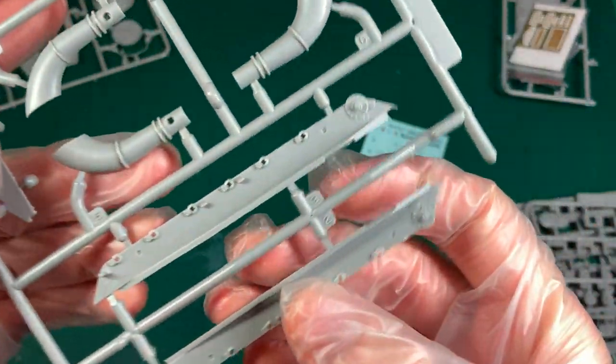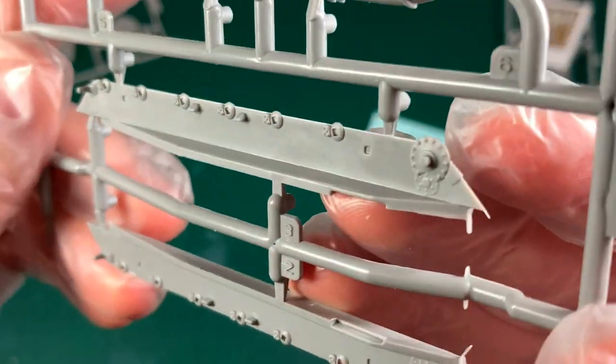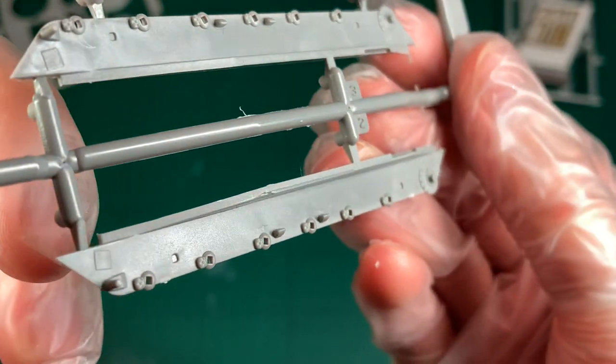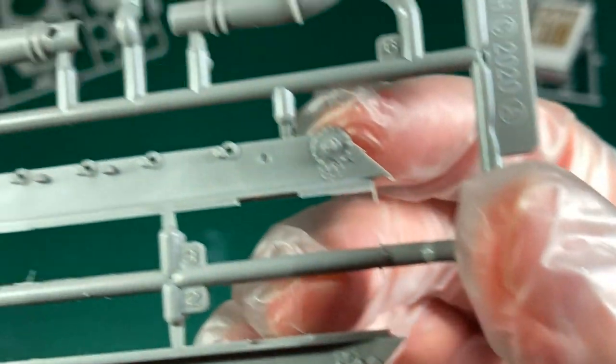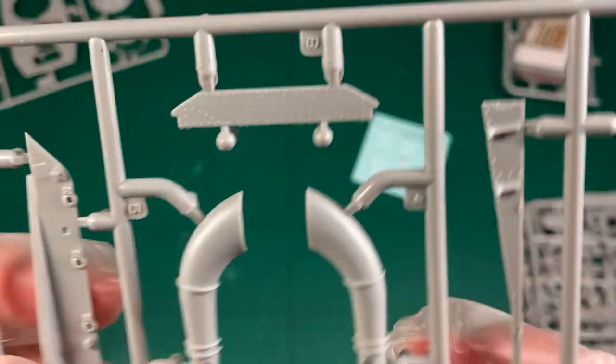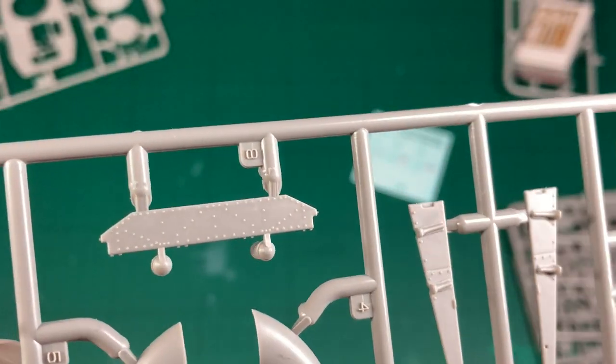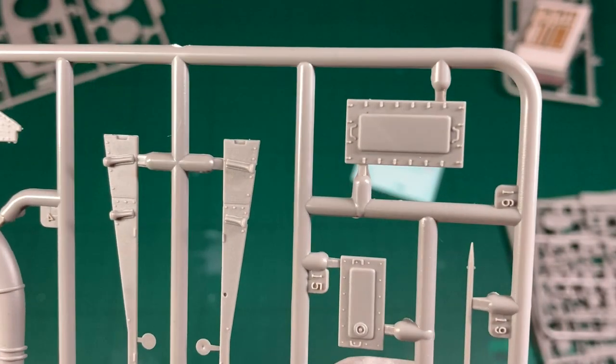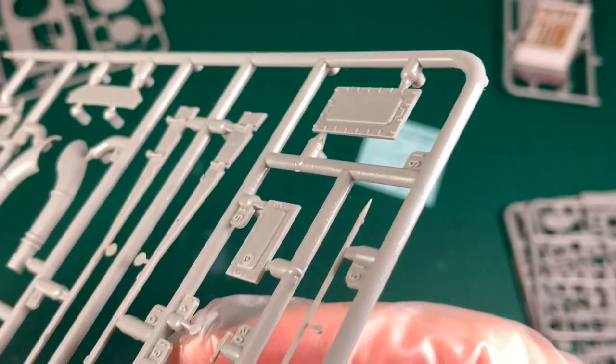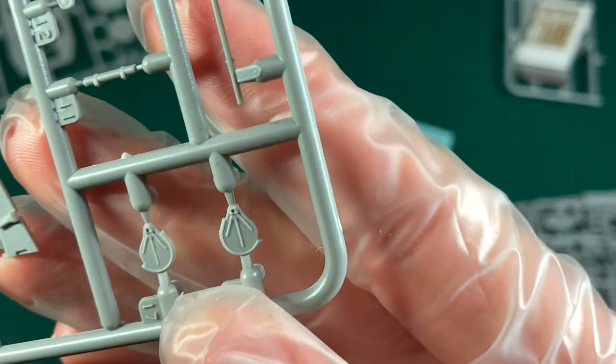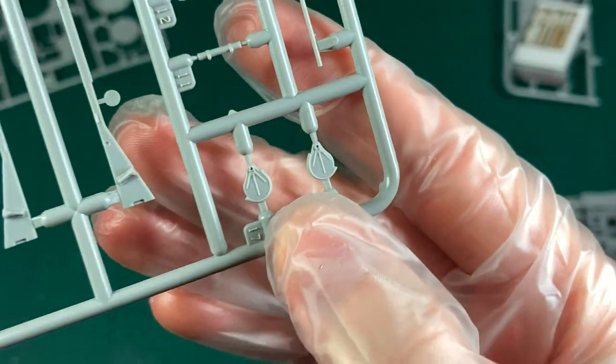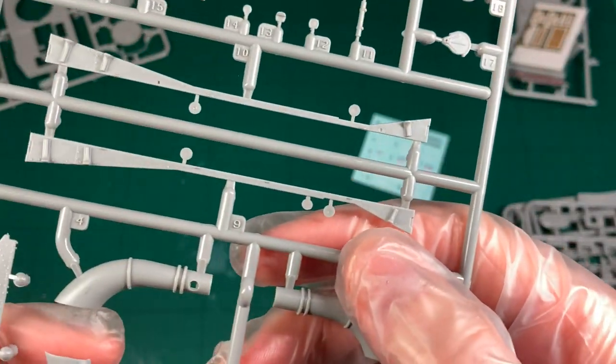Now onto the next sprue. We just have the bottom running gear there which has some nice detail. Where the sprocket will go and all of the wheels. Then you've also got the bow plane there which has some really nice detail, which is a lot better than I expected. I thought we'd at least see a couple of injection molding blips. Overall though you've got some good detail there. The hydrojets look good as well and I think they will fit nicely together.